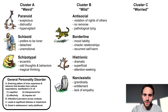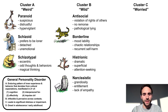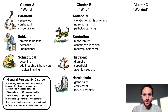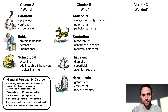Histrionic personality disorder involves dramatic behavior, superficial relationships, and overall attention-seeking behavior, much like Kanga's child Roo, who is always putting on a show and seeking his mother's attention. Narcissistic personality disorder involves grandiosity, entitlement, and a lack of empathy, like the verbose and overconfident Owl.